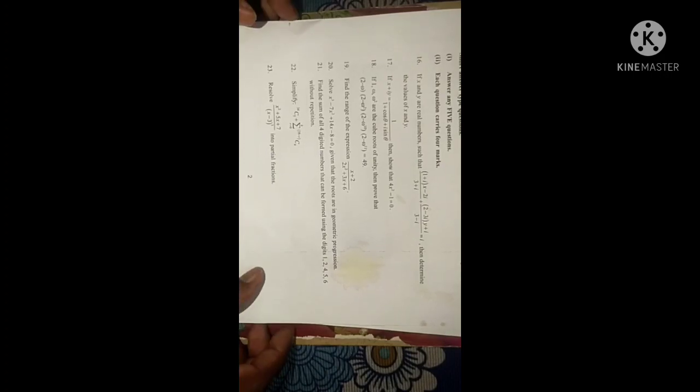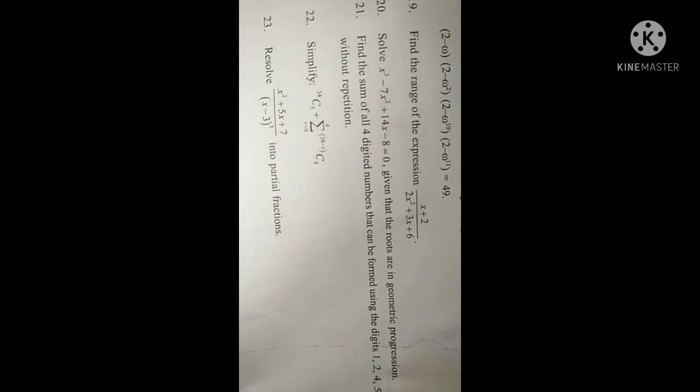Question 21: Find sum of all four digit numbers that can be formed using digits 1, 2, 4, 5, 6 without repetition. Question 22: Simplify ³⁴C₅ + Σ(r=0 to 4) ³⁸⁻ʳC₄. Question 23: Resolve (x² + 5x + 7)/(x - 3)³ into partial fractions.